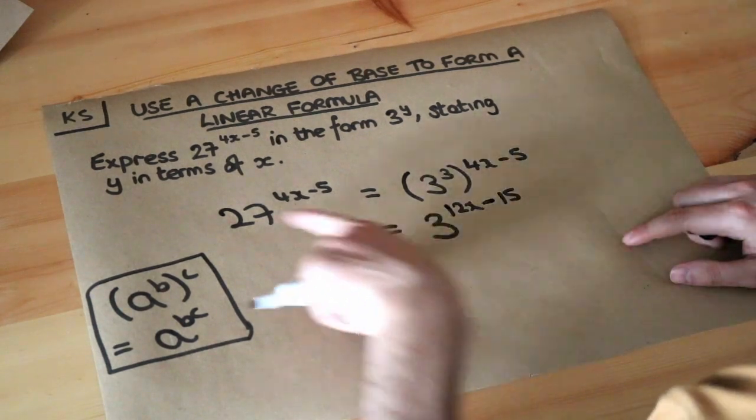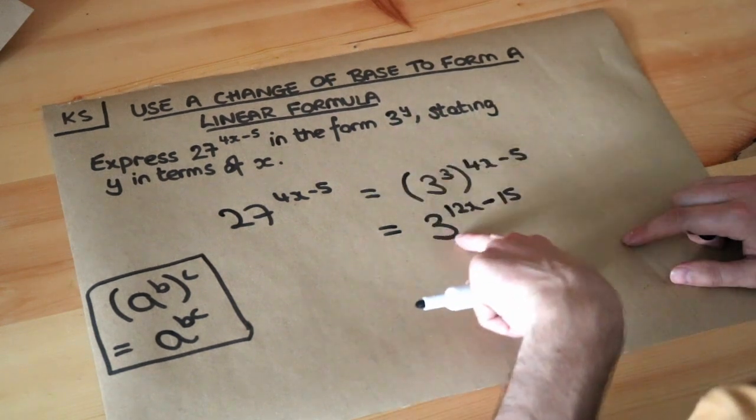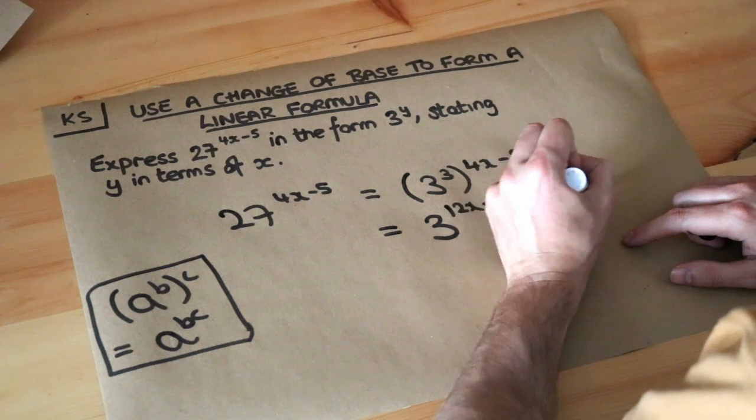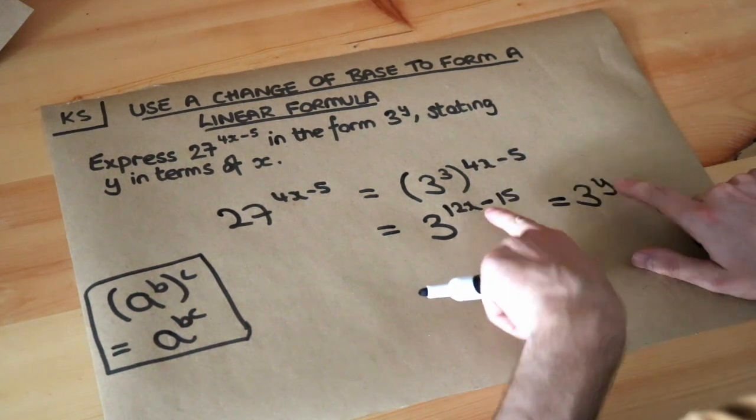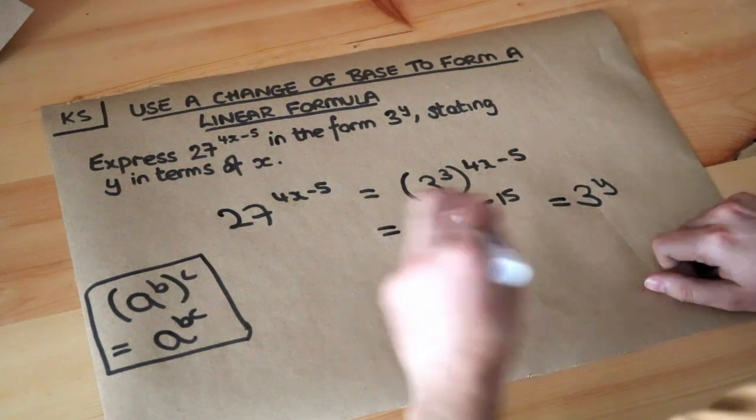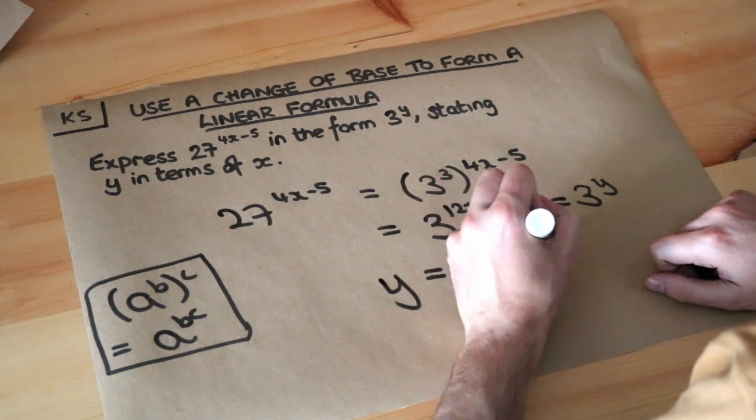And now we're done. We've written this expression here in the form 3 to the power of something. So that y, if that's equal to 3 to the y, then by equating the indices, we can see that 12x minus 15 has to be equal to the y. So y is equal to 12x minus 15.